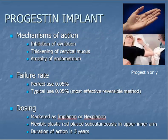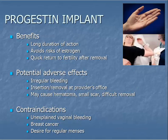The progestin subdermal implant is progestin only and is placed under the skin of the upper arm by a health care provider. It is the most effective reversible method of contraception and is marketed as Implanon or Nexplanon. Listed here are the mechanisms of action, failure rate, and dosing. Benefits, potential adverse effects, and contraindications for the progestin implant are listed here.